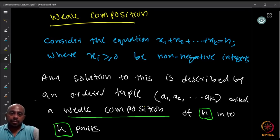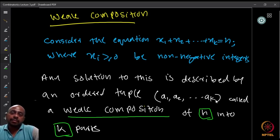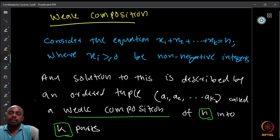Welcome to Week 3 of lectures on combinatorics. In the previous two weeks, we looked at the Pigeonhole Principle and its applications, then basic counting techniques like the addition rule and product rule. Now we are going to look at further applications of these basic techniques to develop more advanced tools and results.